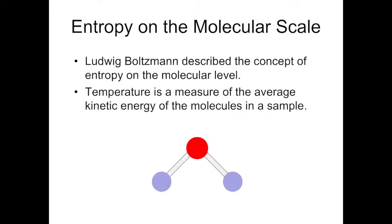A scientist named Boltzmann described the concept of entropy on the molecular level, like we just described with a couple of molecules moving back and forth. And Boltzmann decided that temperature was very important to describing entropy. And as a reminder, temperature is just a measure of the average kinetic energy of the molecules in a sample. Therefore temperature is related to movement. Kinetic energy and movement are intrinsically linked.